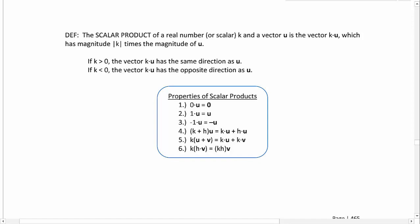And here we have properties of scalar products. All of these properties follow the same rules as our properties for multiplying real numbers. So first one, if you multiply a vector by the number zero, you get the zero vector. If you multiply a vector by one, you get that same vector. If you multiply a vector by negative one, you get the opposite vector. Property number four is a distributive property.